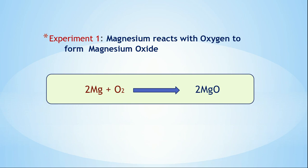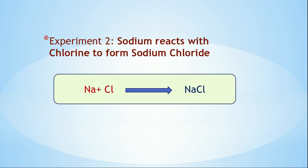Observe this example: magnesium reacts with oxygen to form magnesium oxide. If we write it as a chemical equation, it will be: 2Mg + O₂ → 2MgO, where magnesium reacts with oxygen to form magnesium oxide as a compound or product.